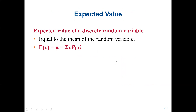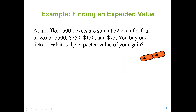The expected value E(x) is the same as the mean mu, which equals the sum of x times P(x). For example, a raffle has 1,500 tickets sold at $2 each for four prizes: $500, $250, $150, and $75. You buy one ticket. To find the expected value of your gain, we first calculate the net gain for each prize by subtracting the ticket cost of $2.